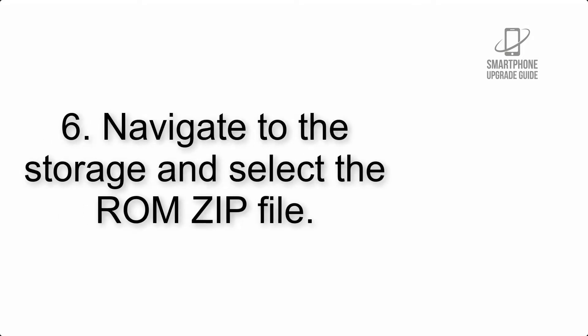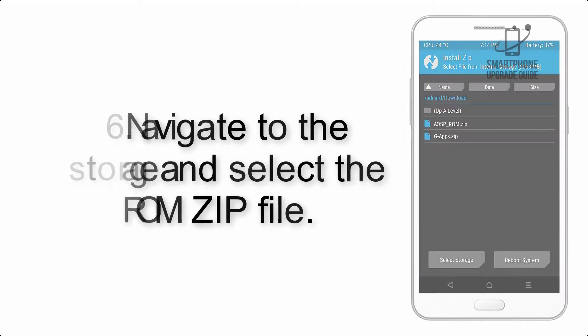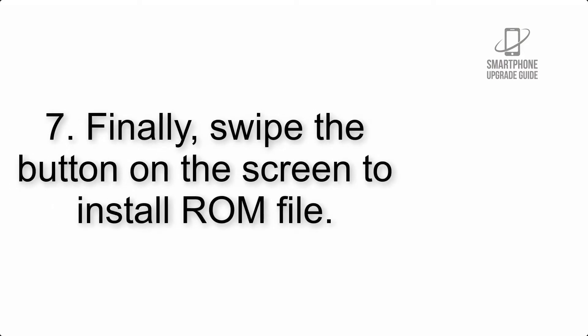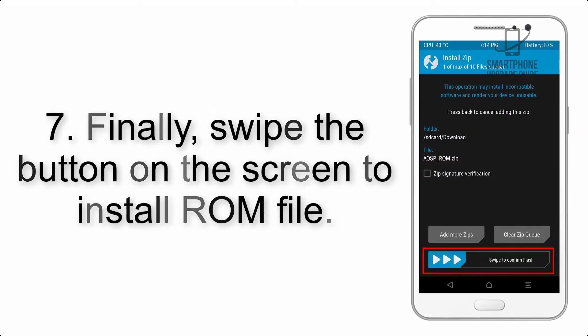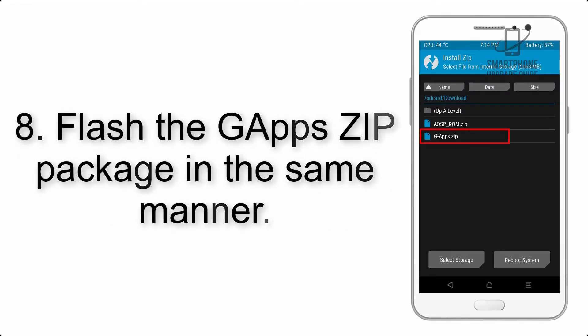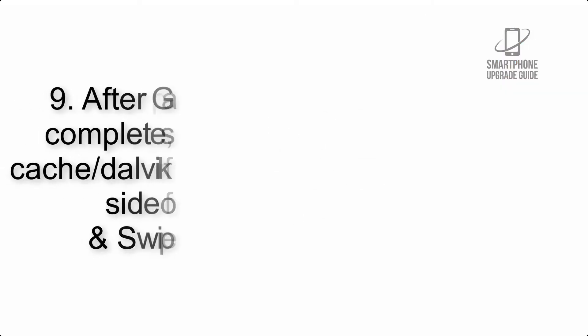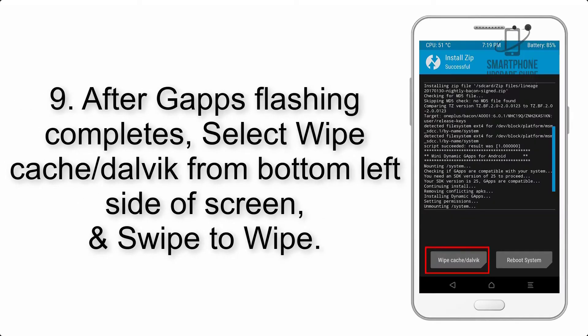Step 5: Go back to the recovery main screen and tap on the Install button. Step 6: Navigate to the storage and select the ROM zip file. Step 7: Finally, swipe the button on the screen to install the ROM file. Step 8: Flash the GApps zip package in the same manner.